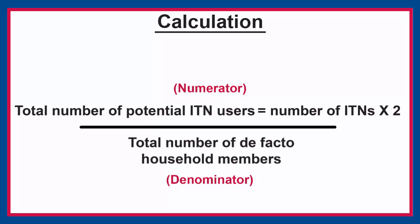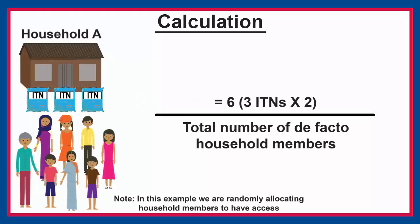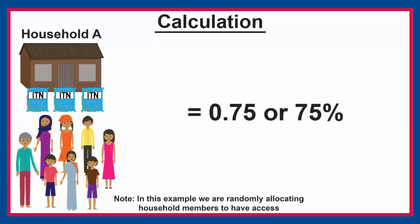ITN access cannot exceed 1 or 100%. Here's an example. Household A has 3 ITNs and 8 people, which means that there are 6 potential users — remember, each ITN protects 2 people. We take 6 and divide by 8, the number of people in the household. This shows that 75% of the household members have access to an ITN.